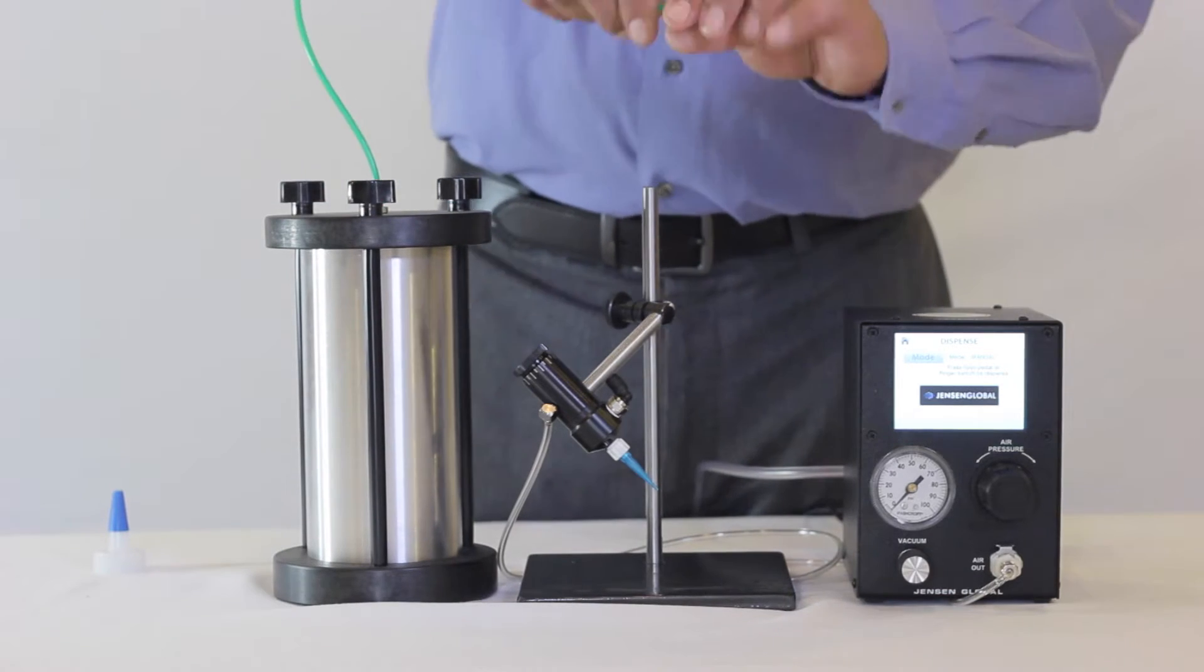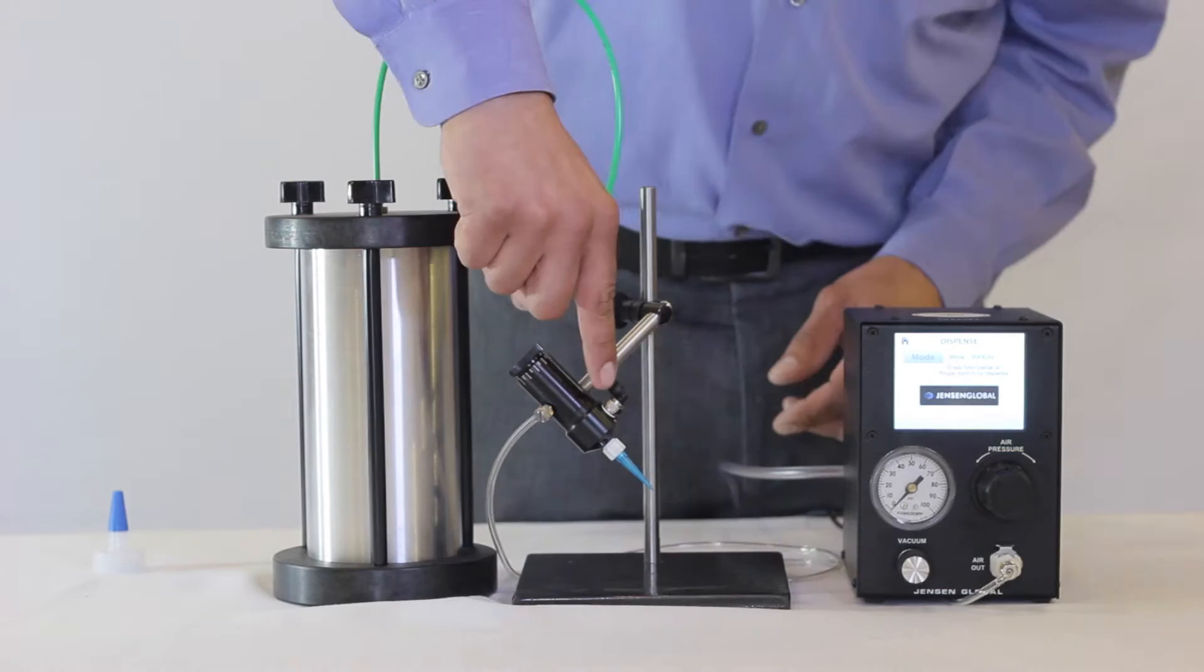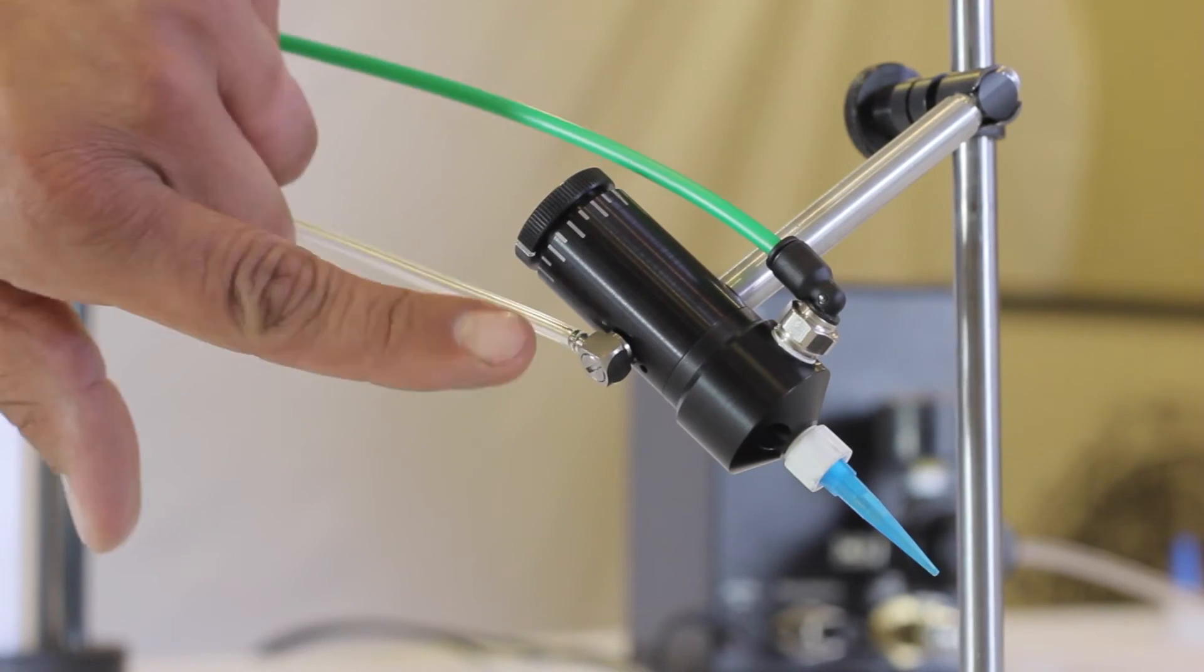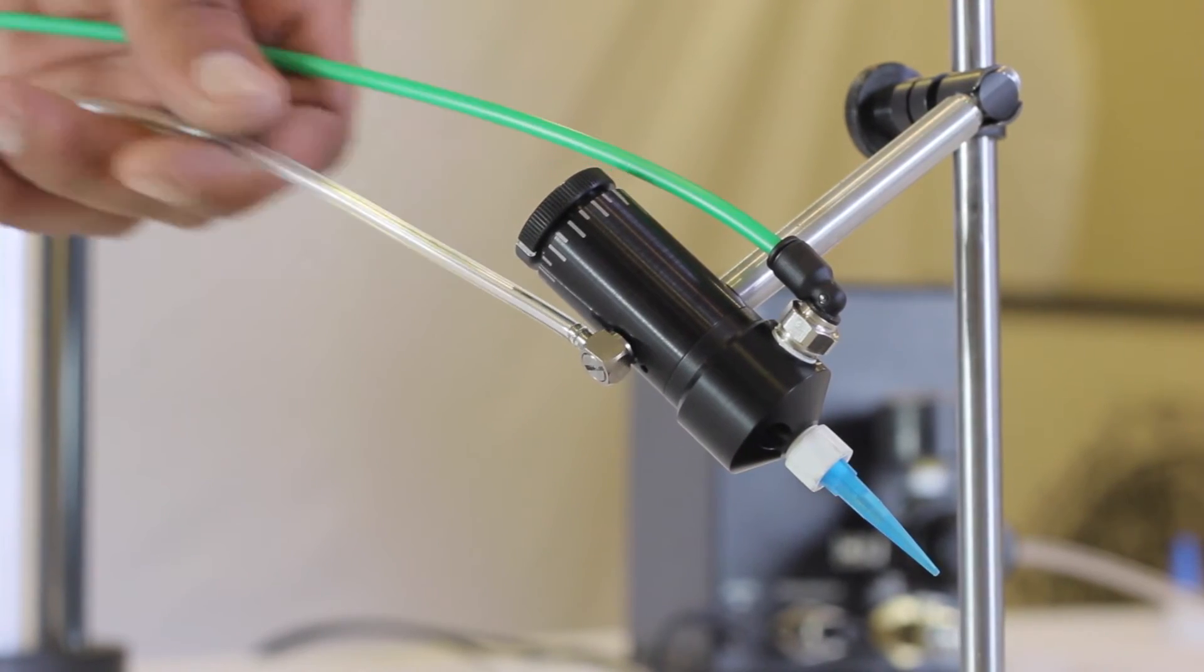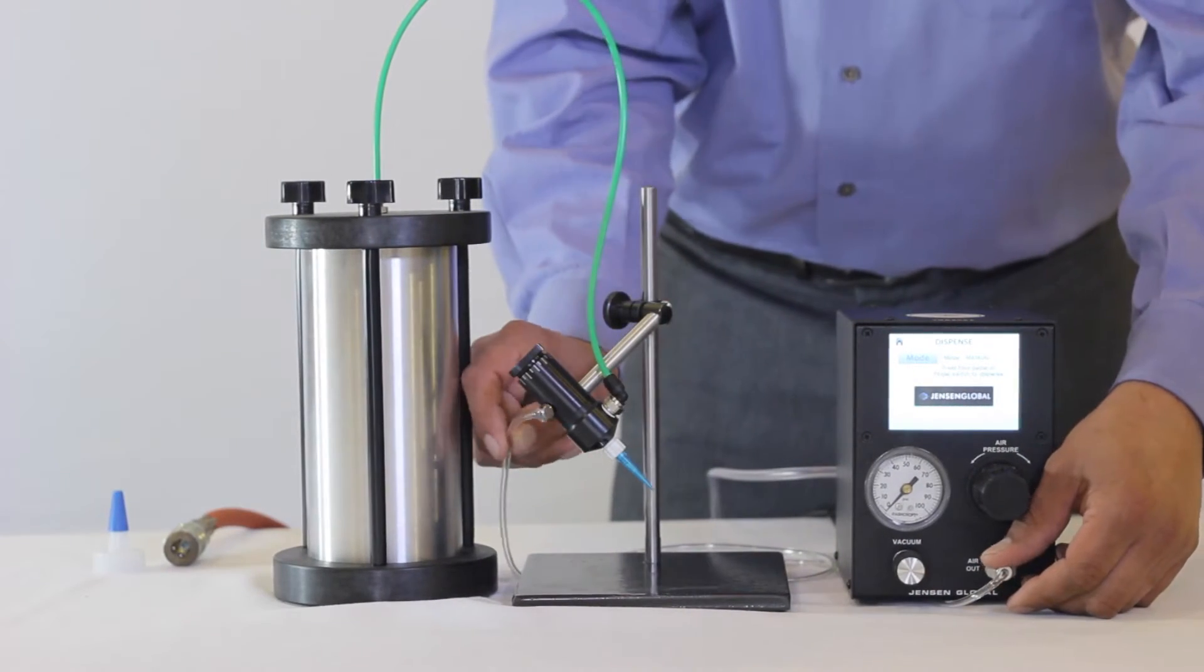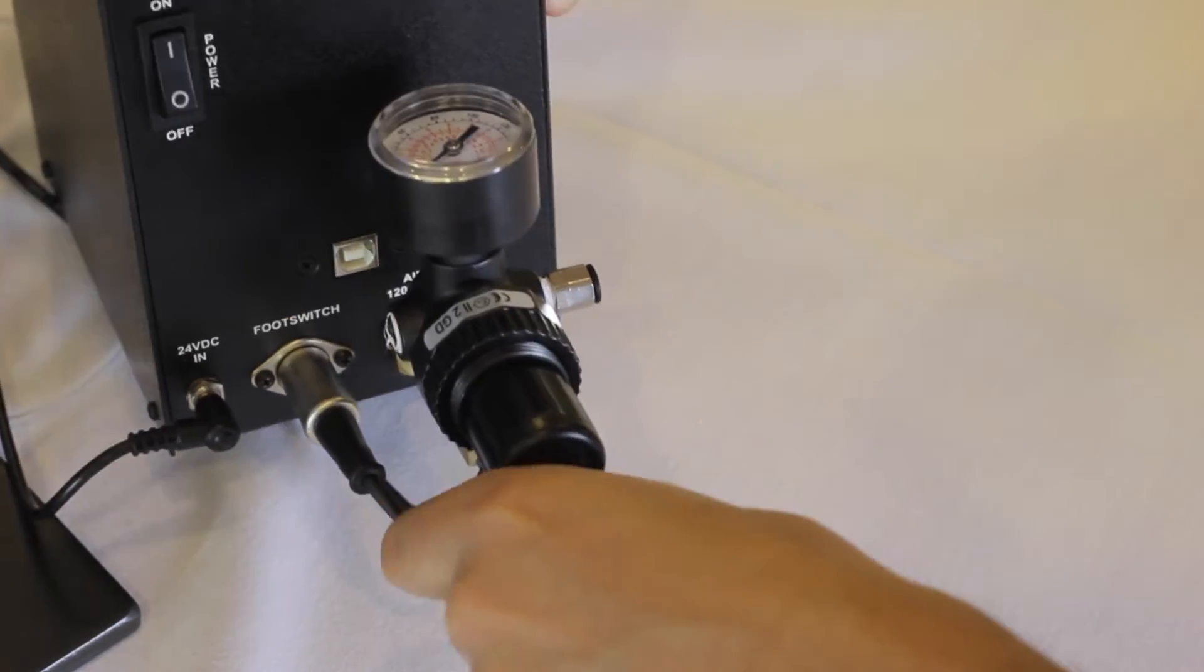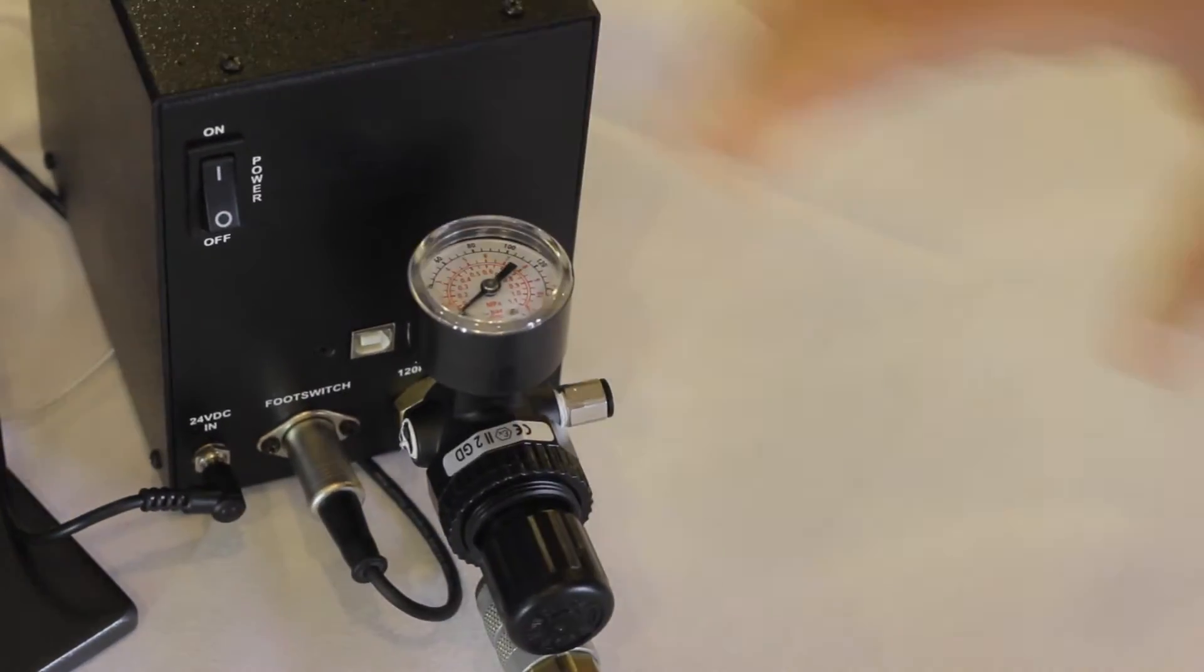Connect the material line to the fitting located here on the fluid housing. The port labeled air out on the dispenser is where the clear 5/32 inch air line attaches to the valve. Connect the air source to the regulator on the back side of the dispenser. This gauge controls the material pressure in the tank.